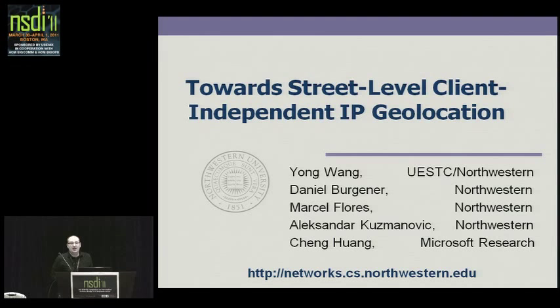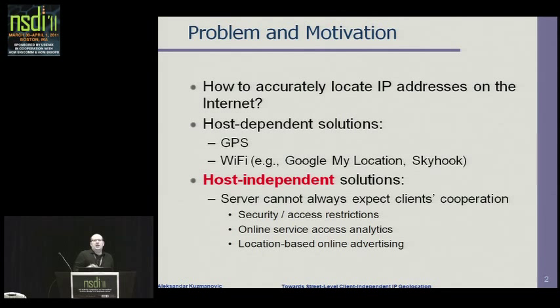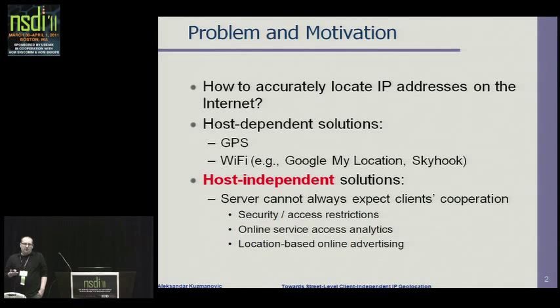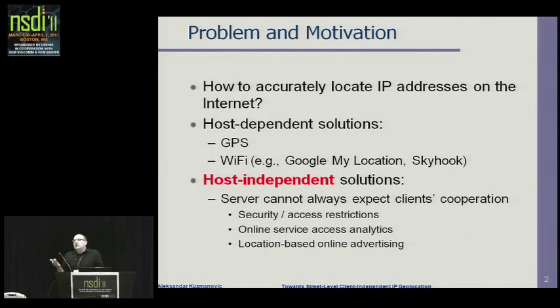So let me try to say something about the problem. The problem is fairly well known: how can you determine the geographic location of an internet host? The first issue that might come to mind is we have GPS today — why would we ever care about a system that would geolocate an end user? Even if you're indoors and GPS doesn't work, there are many systems that can give you accurate location — Google and Skyhook are driving their trucks around the world, sensing Wi-Fi networks to determine exact geographic locations. So why do we need IP geolocation services in this day and age?